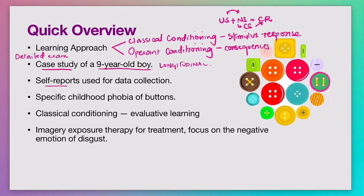Saavedra and Silverman used self-reports to collect information about this nine-year-old boy who presented with a phobia. His phobia is very unique — he was scared of buttons. A phobia is defined as an irrational and extreme fear. It's not the kind of fear you experience watching a horror movie. When it's a phobia, it's an irrational fear that controls all of your behaviors in ways that make you maladaptive.